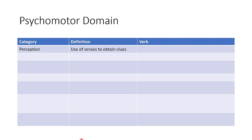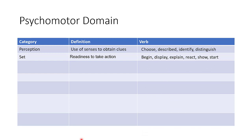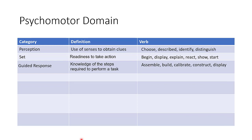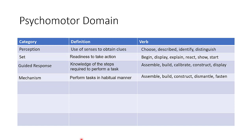On the psychomotor domain, we have categories. The first is perception — use of senses to obtain clues — and verbs you can use include choose, describe, identify, and distinguish. Then you have the set category, representing readiness to take action, with verbs like begin, display, explain, react, and show. The next category is guided response: knowledge of the steps required to perform a task, with verbs like assemble, build, calibrate, construct, or display. And mechanism: the student will be able to perform tasks in a habitual manner, tested with assemble, build, construct, dismantle, and fasten.